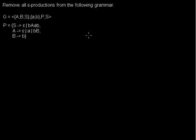This is another example on how to remove epsilon productions from a grammar. In this example we have an A that goes to epsilon, so this is an empty production.